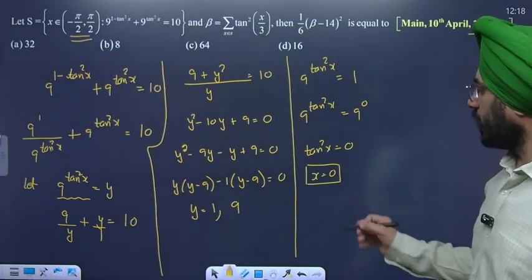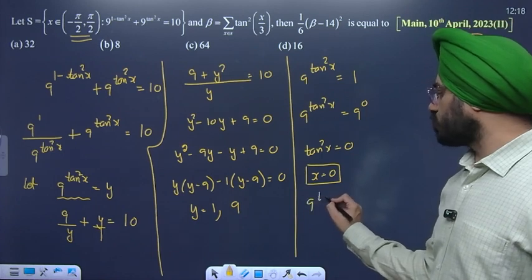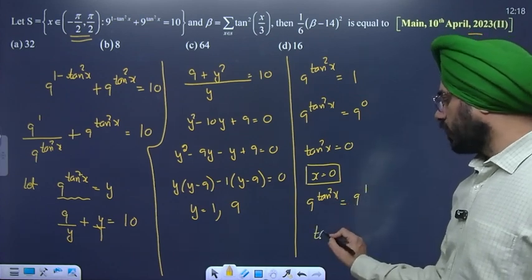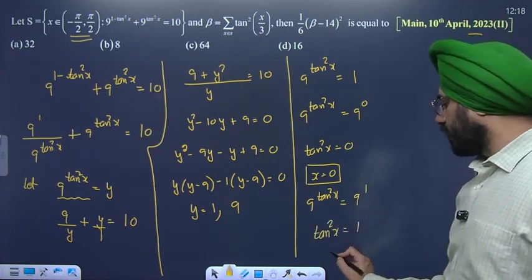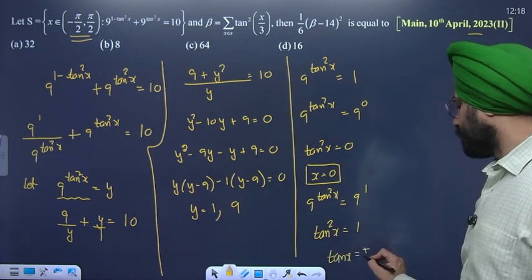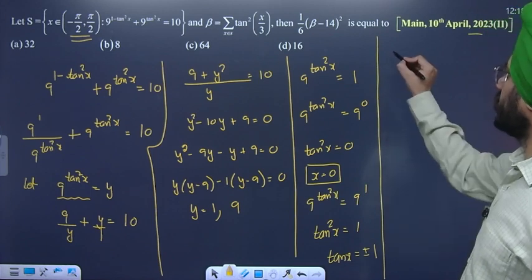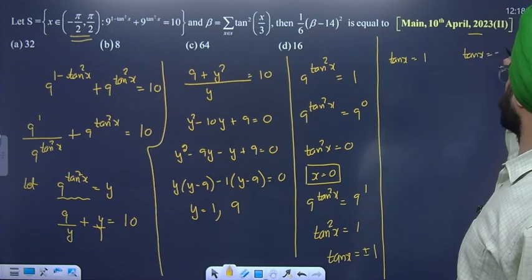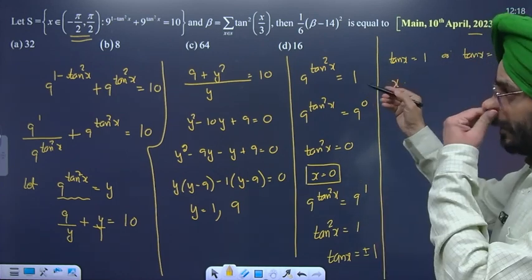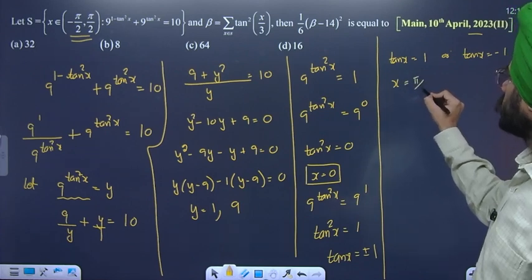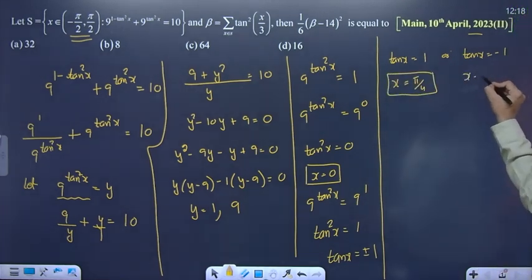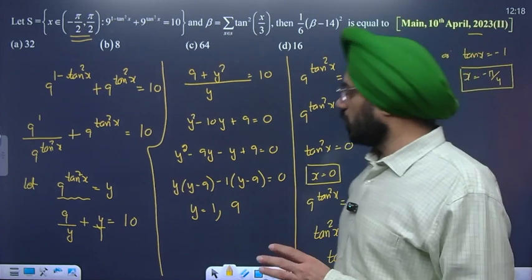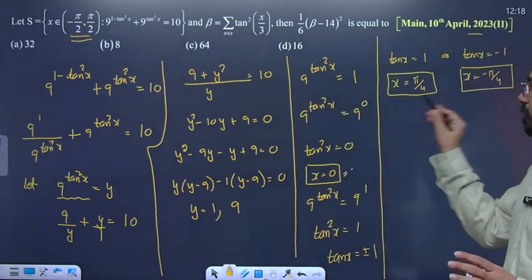For the next case, putting y = 9: 9^(tan²x) = 9, so tan²x = 1, meaning tan x = ±1. Checking within minus pi by 2 to pi by 2: tan x = 1 gives x = pi by 4, and tan x = -1 gives x = minus pi by 4. So we have x values: 0, pi by 4, and minus pi by 4.